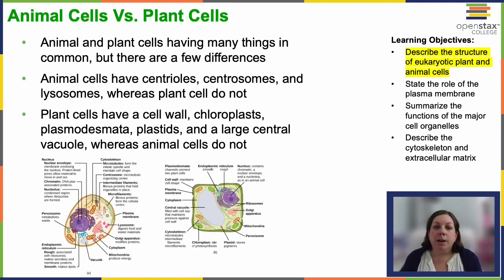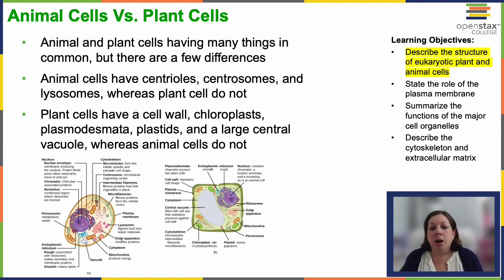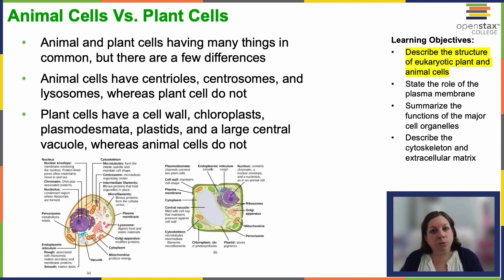Let's talk about animal cells versus plant cells. Animal and plant cells have a lot of things in common, but there are some major differences. Animal cells have centrioles, centrosomes, and lysosomes. These play important roles in setting the poles for cell division — particularly the centrioles and centrosomes. Lysosomes are our digestive space.